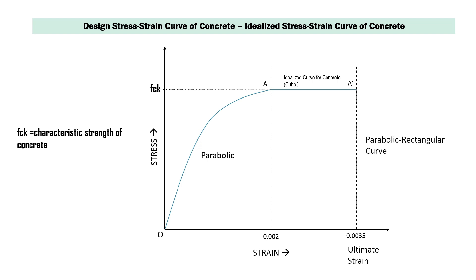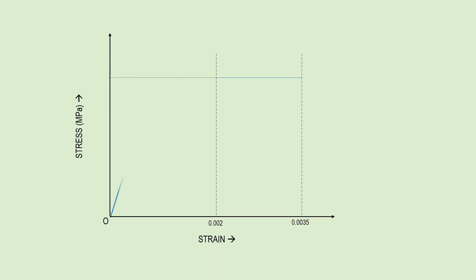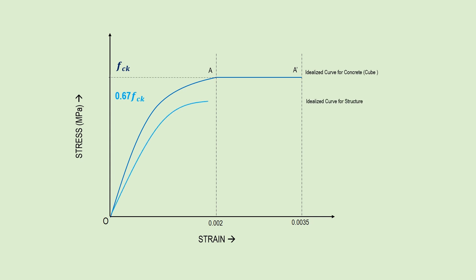This first graph is based on FCK, but in real structures we don't use concrete exactly like a cube sample — real structures vary. So we reduce the FCK value to 0.67 FCK for practical use. When designing a full structure, the compressive strength is reduced and also influenced by the size and shape of the structure. Hence, we get a lower graph below the first graph, and this obtained curve is the idealized curve for concrete.